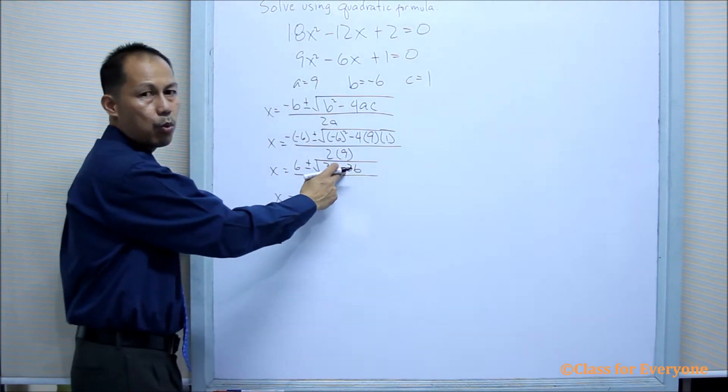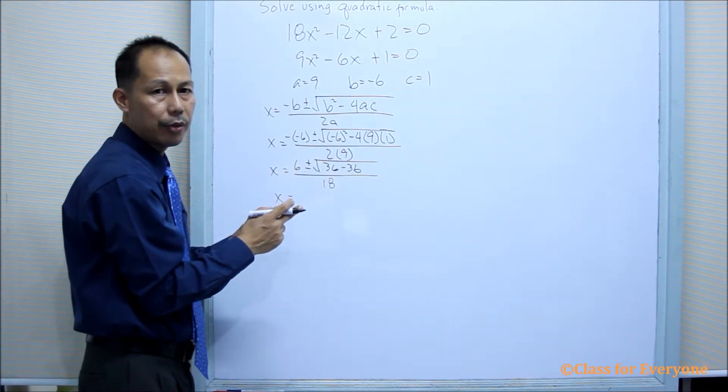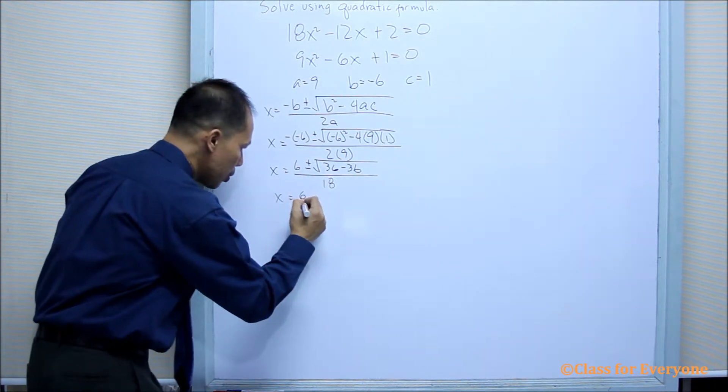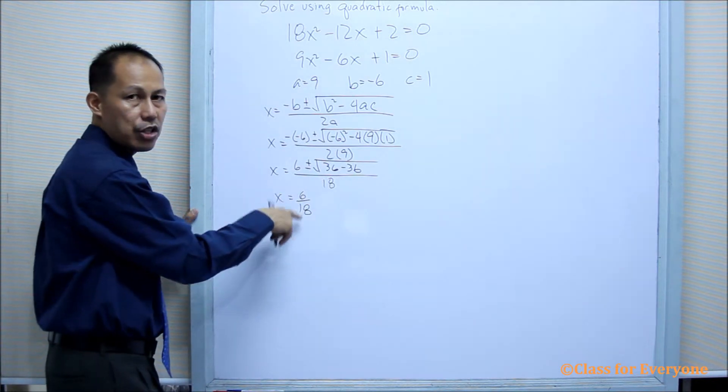36 minus 36 equals 0. Therefore, we'll no longer have a radical, in which case we'll now have 6 over 18. And we can still simplify 6 over 18.